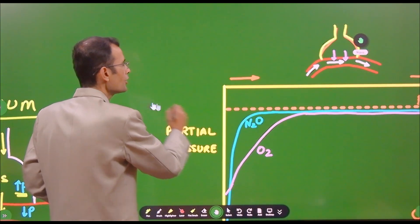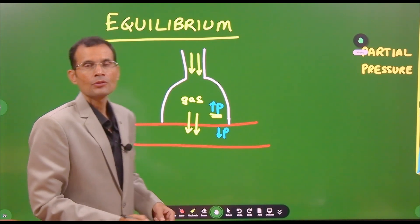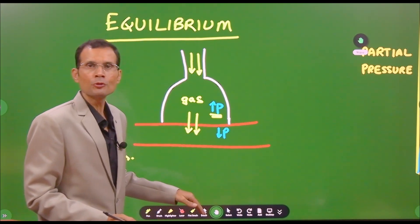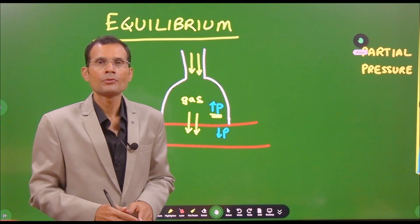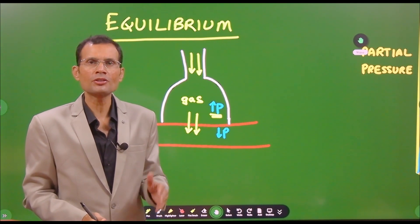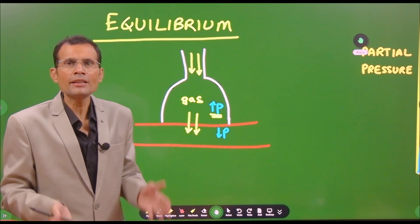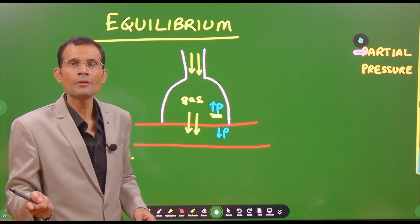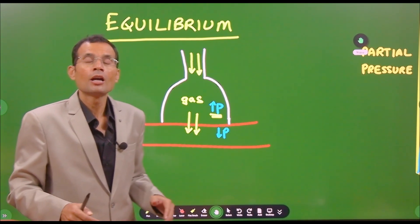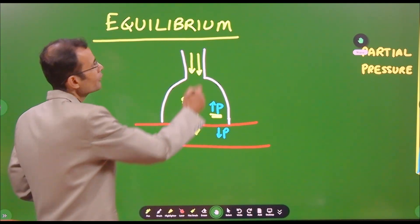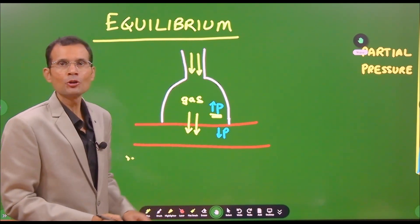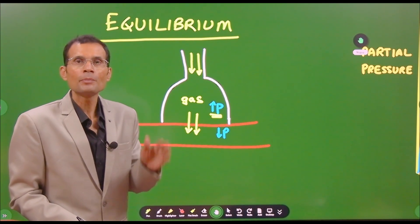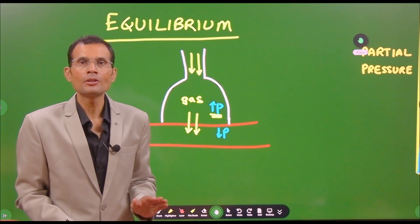Imagine you gave a gas by inspiration, and as soon as it reached the alveolus, it instantly diffused into the blood and instantly reached equilibrium. Such a gas would not be useful to measure diffusing capacity because it hardly gave us any time or chance to measure how much gas crossed the membrane or how long it took to reach equilibrium. We need a gas that reaches the alveolus, starts diffusing into the blood, and keeps on diffusing — never reaching equilibrium.